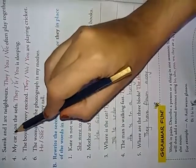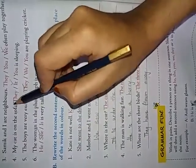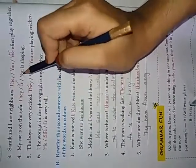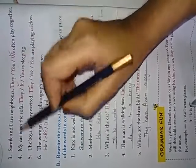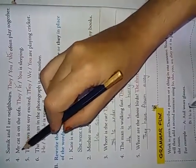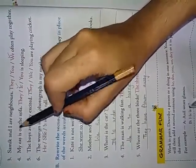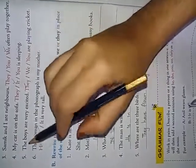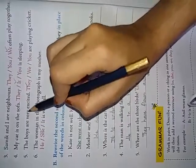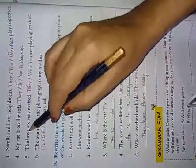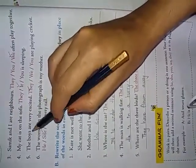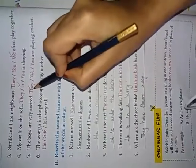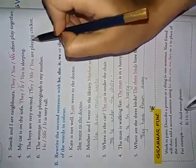Fourth one. My cat is on the sofa. They, it or you is sleeping. Whenever cat comes, it refers to some animals as well. So, it is the correct option. Fifth one. The boys are very excited. The boys, nothing but group of peoples. So, here they should come. They are playing cricket.